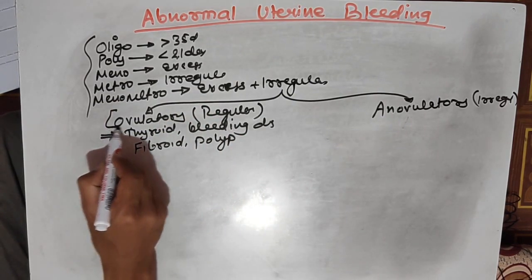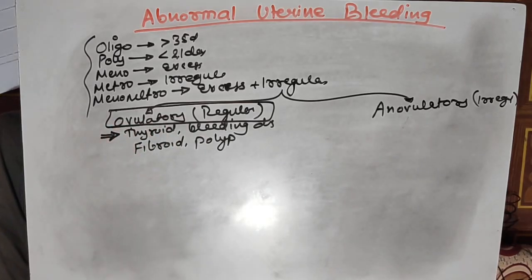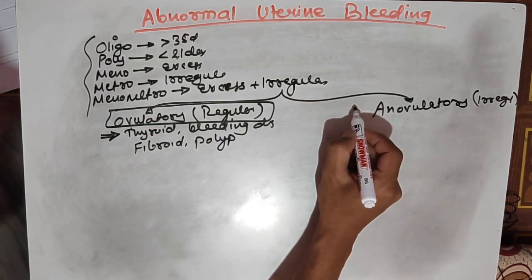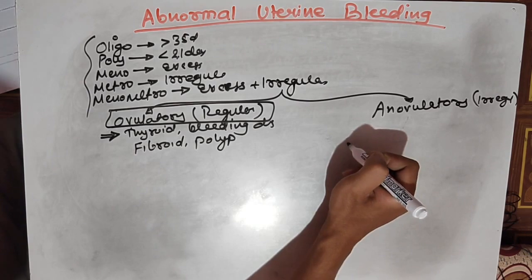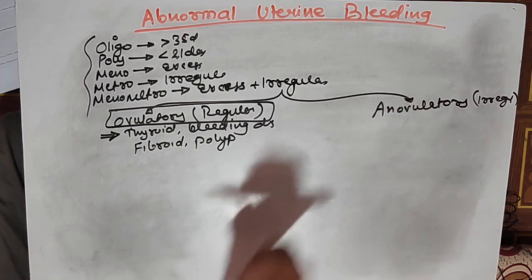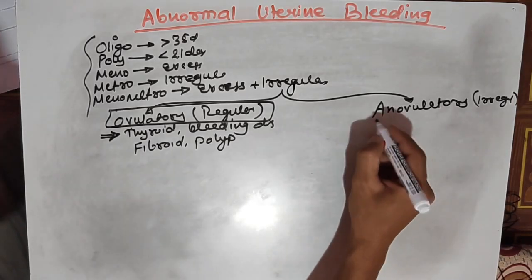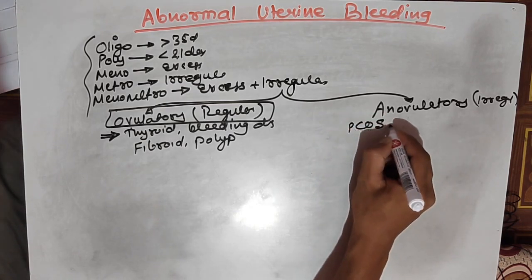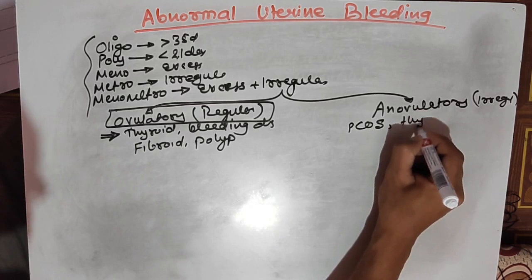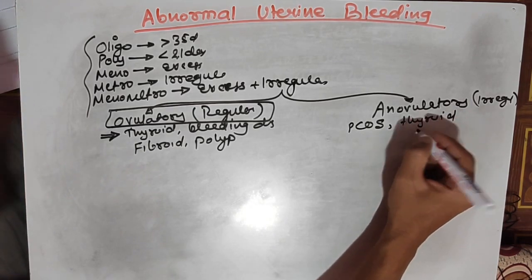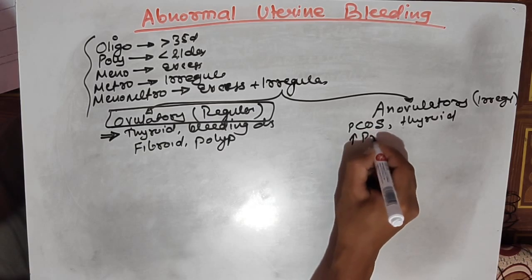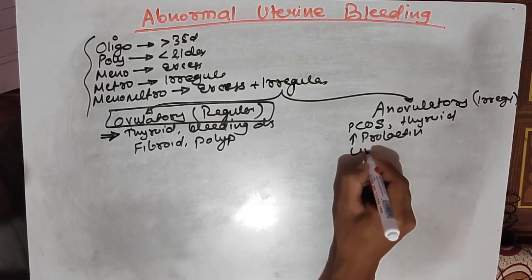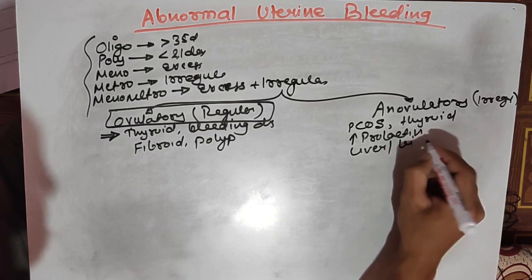In anovulatory type of AUB, the hormonal sequence from the hypothalamus to pituitary to ovary to uterus is disturbed. Common causes of anovulatory AUB include PCOS (polycystic ovarian syndrome), thyroid disorder, hyperprolactinemia, and liver or kidney disease.